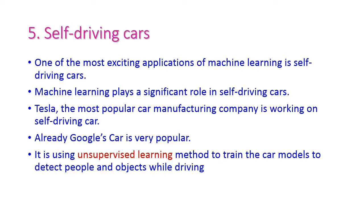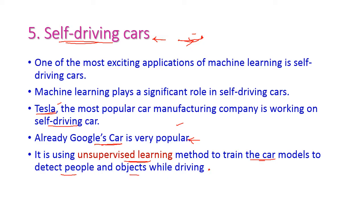The next popular application is self-driving cars — without human input, the car itself identifies the destination route and analyzes traffic conditions to drive by itself. The most popular company working on self-driving cars is Tesla. Google's automatic car is also very popular. Here, unsupervised learning methodology is used to train the car to detect people and objects while driving in traffic.